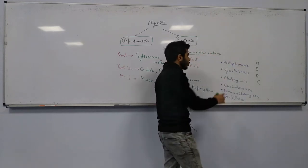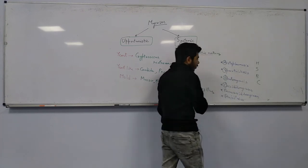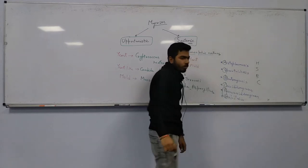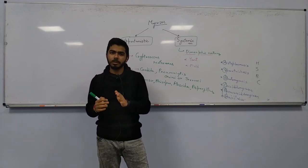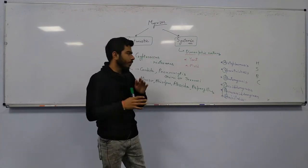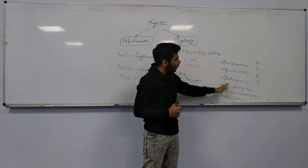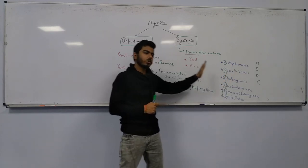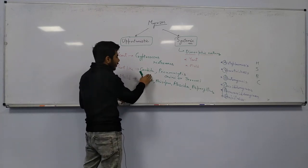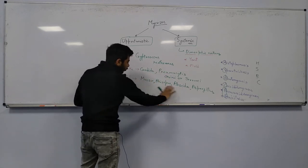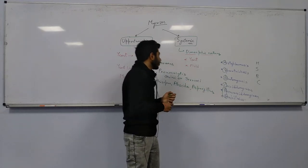These systemic fungi have dimorphic nature — at some temperatures they act like yeast, at others like mold. These will be discussed in the next class. Today we are going to talk about the opportunistic fungi: Cryptococcus neoformans, Candida, Pneumocystis carinii and jirovecii, Mucor, Rhizopus, Absidia, and Aspergillus. Let's start our discussion with Candida.